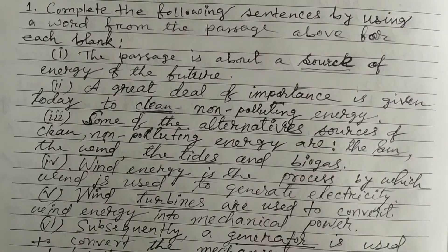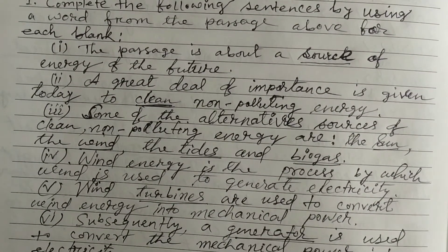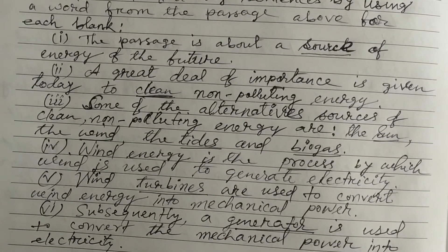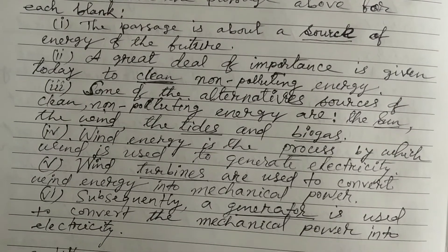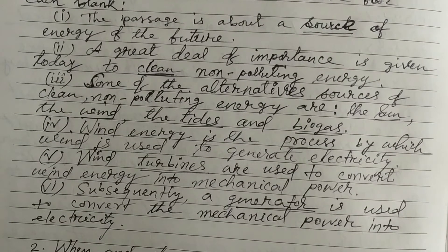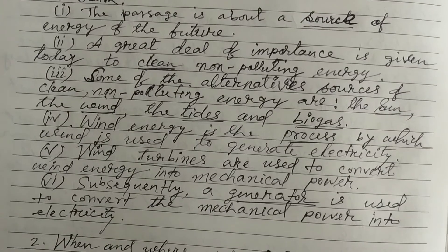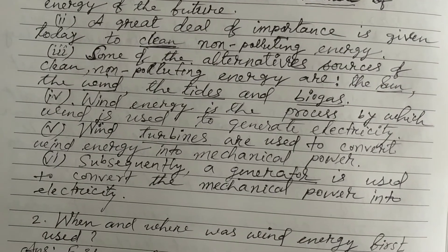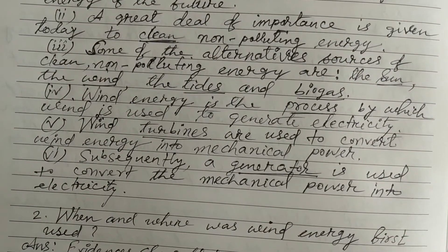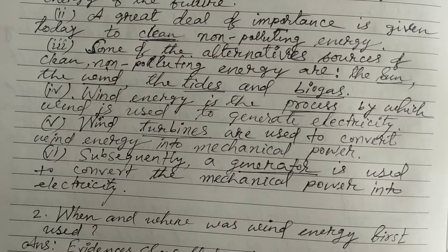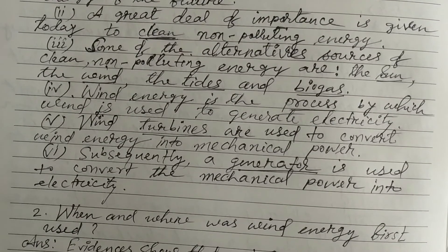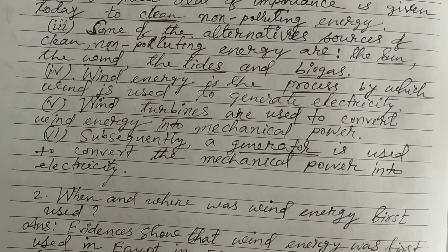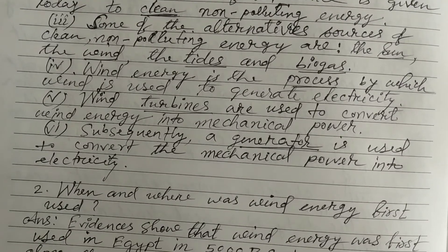4. Wind energy is the process by which wind is used to generate electricity. 5. Wind turbines are used to convert wind energy into mechanical power. 6. Subsequently, a generator is used to convert the mechanical power into electricity.